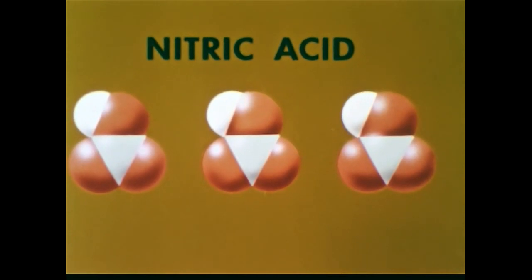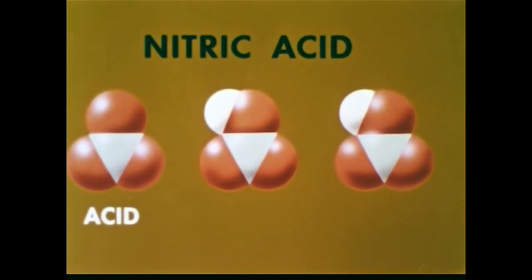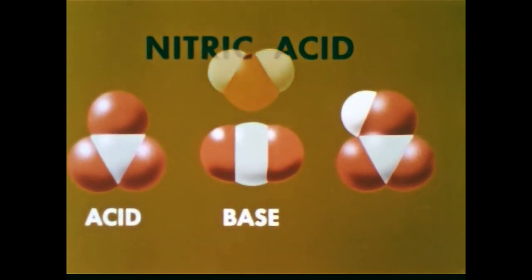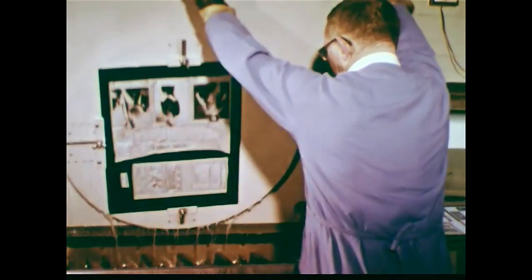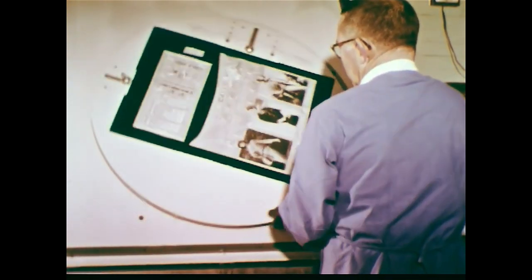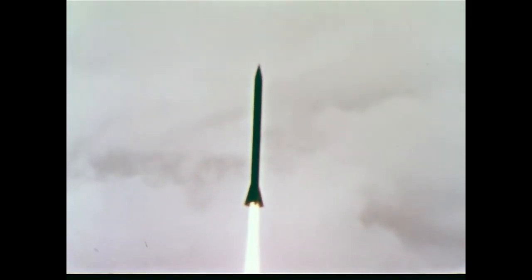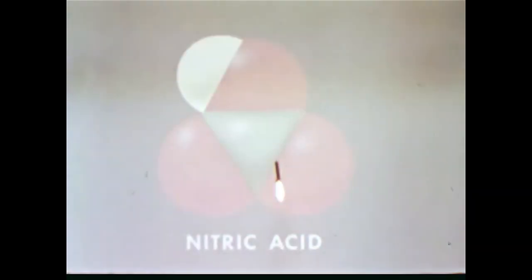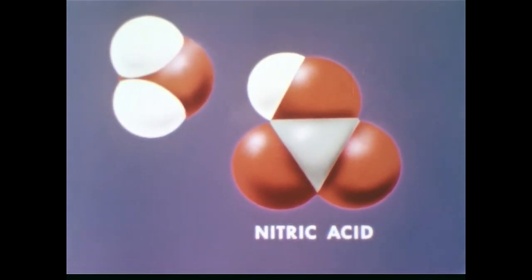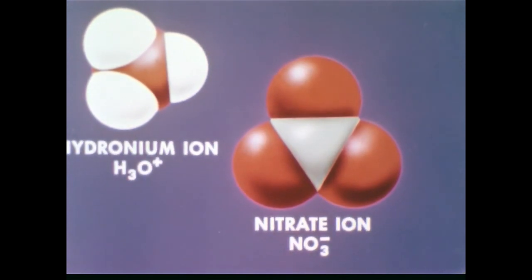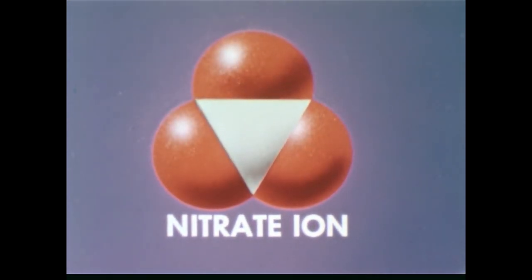We have seen nitric acid can act as an acid and as a base. Now let's see how nitric acid acts as an oxidizing agent. Photographic etching is done by slowly oxidizing metal plates with concentrated nitric acid. Yet the same substance, concentrated nitric acid, is often used to oxidize the fuel in rockets rapidly and vigorously.